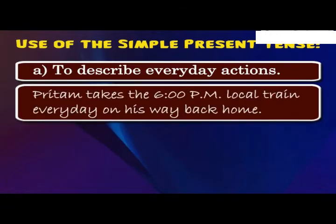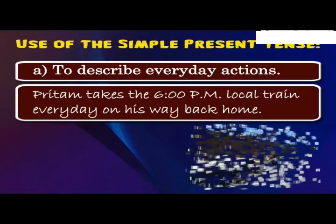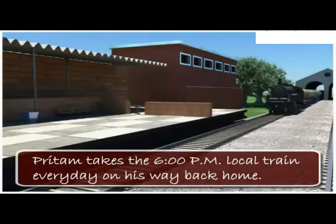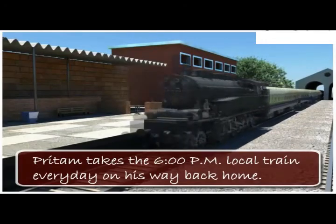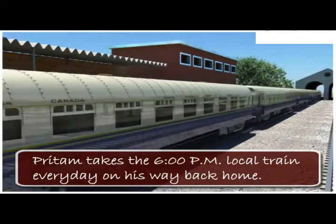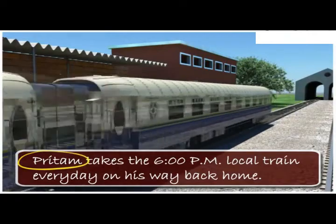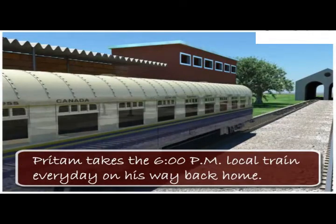Example: Pritam takes the 6 p.m. local train every day on his way back home. Here, this sentence is used to describe the everyday action of Pritam — that is, Pritam is taking the train regularly.